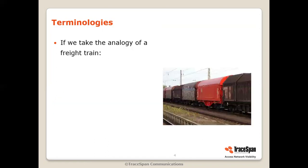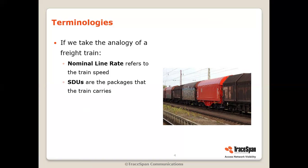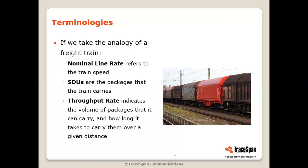Let's take the analogy of a freight train, which will help us understand this better. The nominal line rate is the equivalent of the train speed — how many miles per hour or kilometers per hour. SDUs are the packages that the train carries. And the throughput rate gives us an idea about the volume of packages it can carry — how long it takes to carry them over a given distance, i.e., the rate of transferring the actual packets.